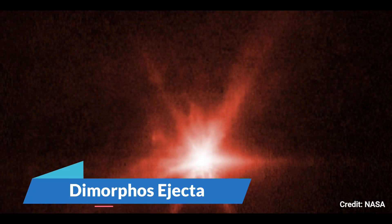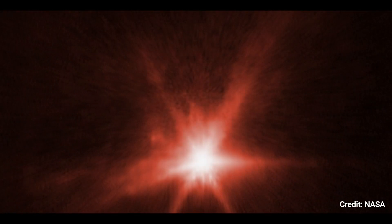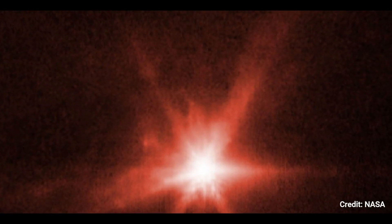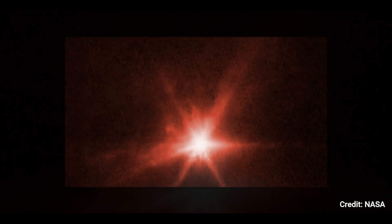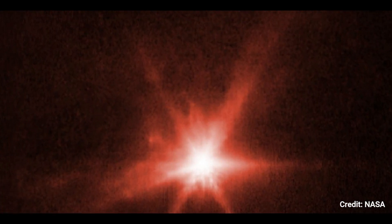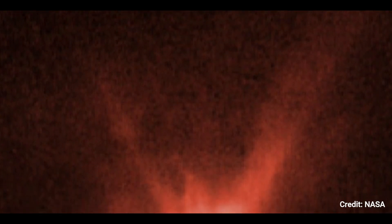Number 6. Dimorphos Ejecta. About four hours after NASA's double asteroid redirection test, DART, made impact, this image from NASA's James Webb Space Telescope's near-infrared camera instrument shows Dimorphos, the asteroid moonlet in Didymos' double asteroid system.